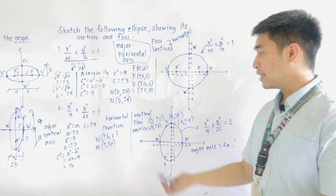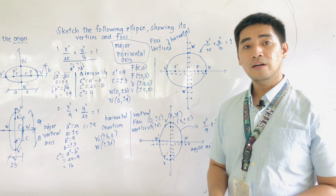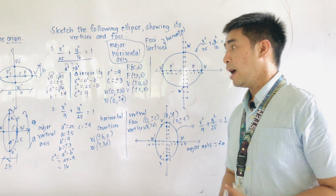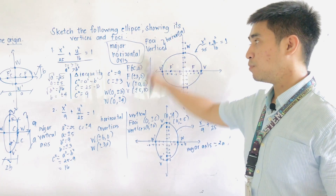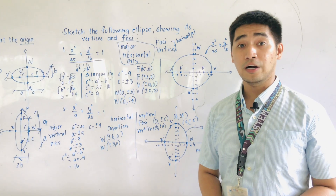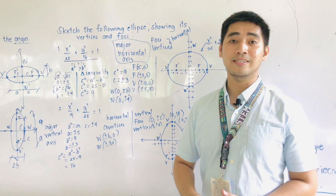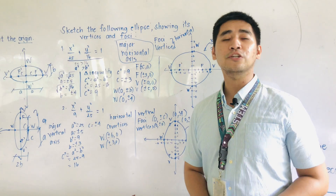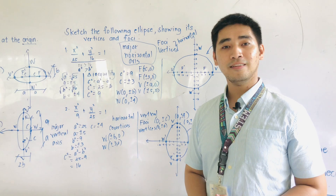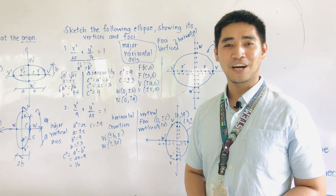That is how you get the values of the major and minor axis. I hope you've learned something from the first and second examples of our video tutorial for ellipse. Once again, I am Engineer Jod Edward Hernandez saying that mathematics is always fun. Goodbye and God bless.